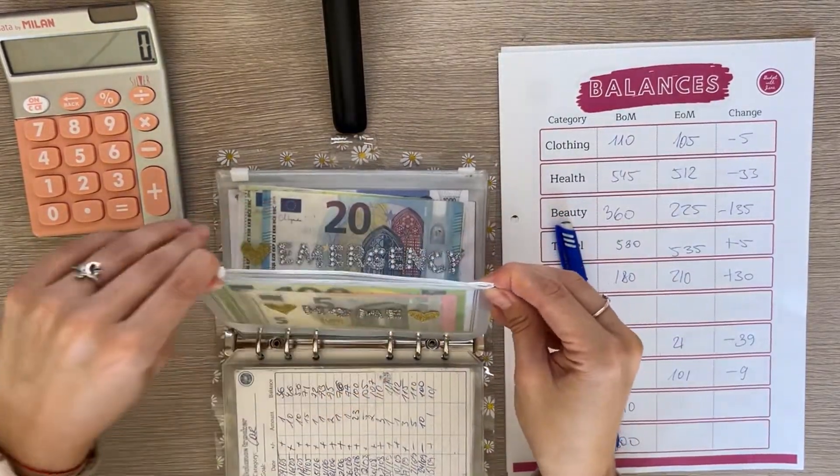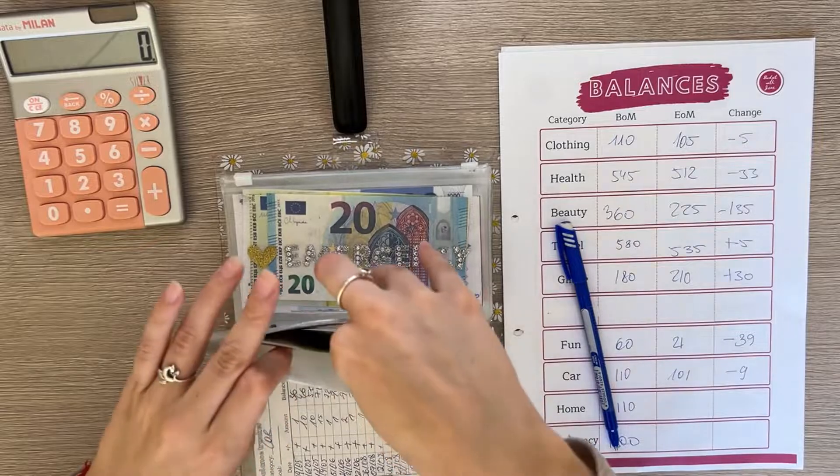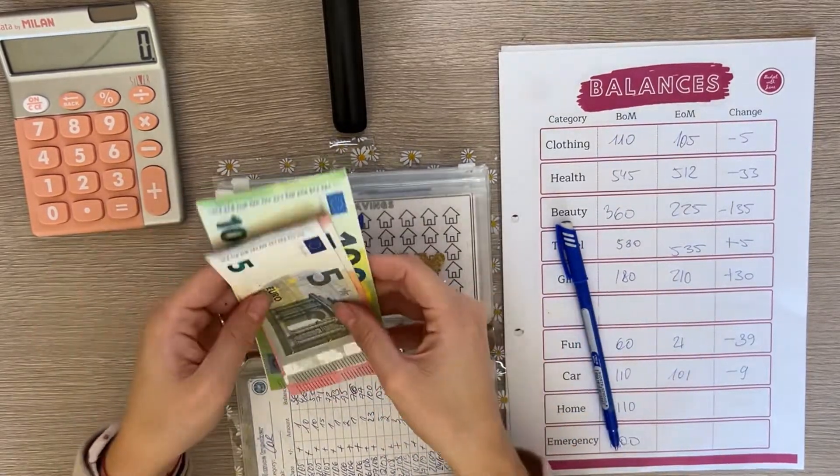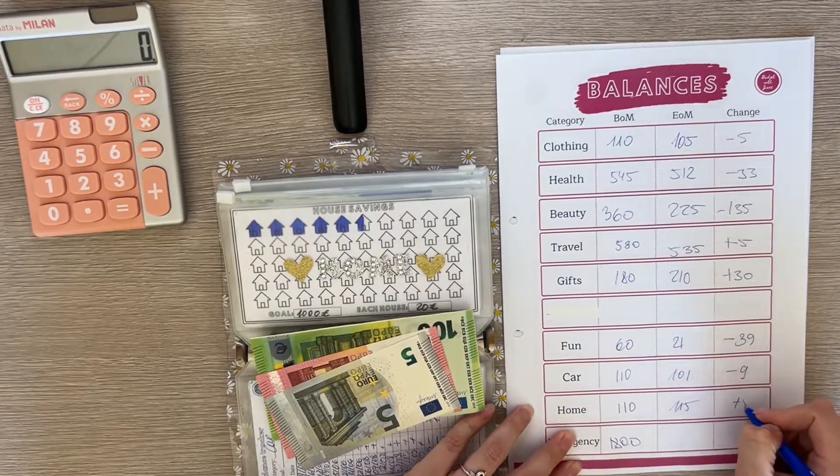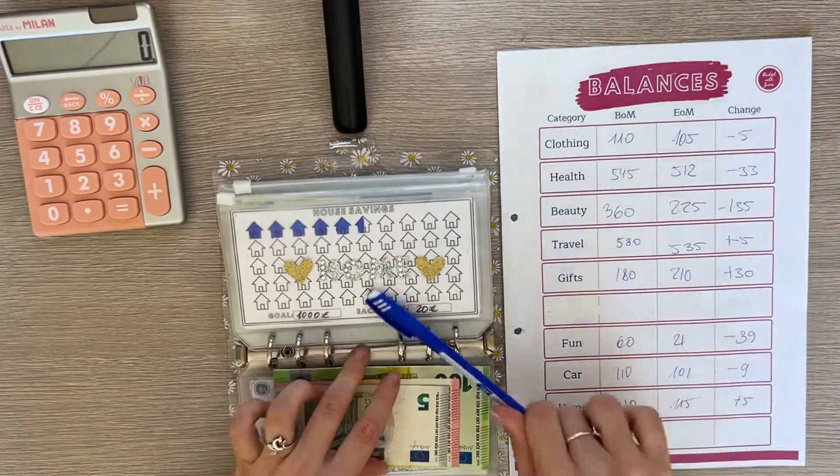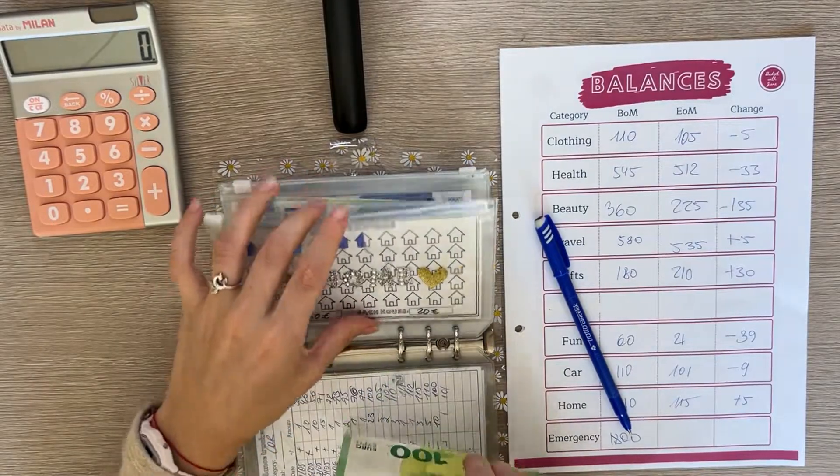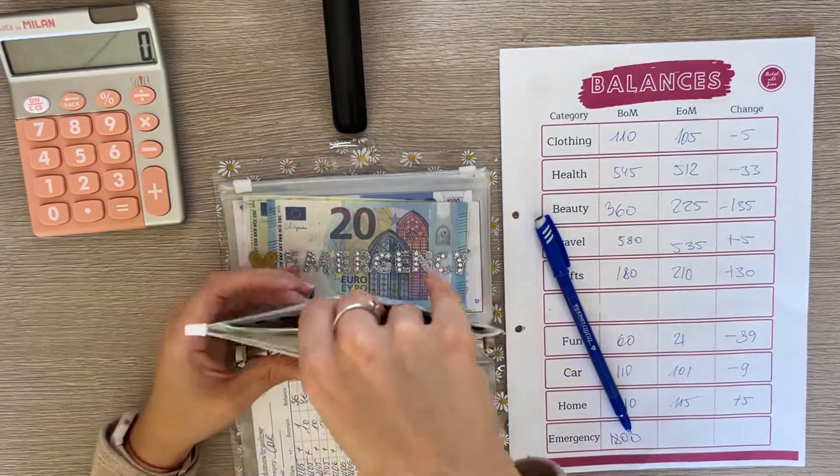Okay so I wiped half of the car tracker off because we have $101 and now it represents the actual amount. That's what happens when you use laminated trackers, you get to erase and add again. Next is home and home has $115 so it's a positive five difference.